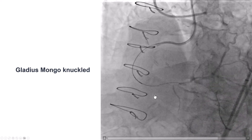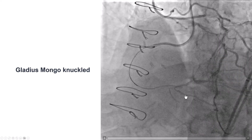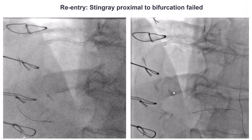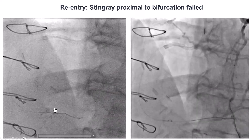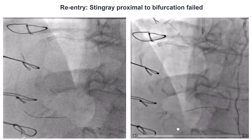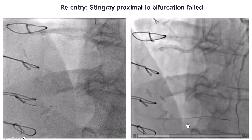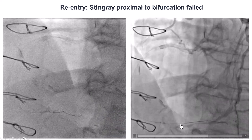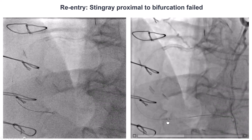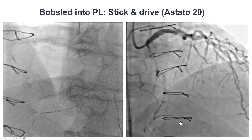We then went back antegrade and knuckled a Gladius Mongo guidewire. We could see that the guidewire was in the extraplaque space next to the distal cap. We then tried to re-enter using the stingray balloon. The problem was that the re-entry zone was fairly narrow due to the bifurcation — re-entering too distally into the posterolateral would lead to loss of the PDA. We also noticed the guidewire was at some distance from the vessel, making re-entry harder.